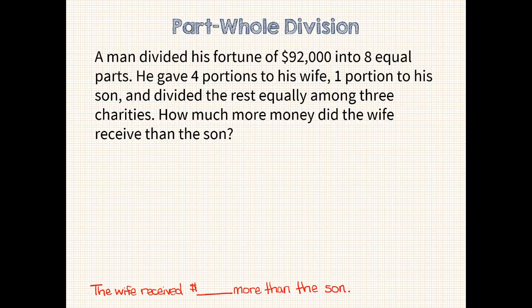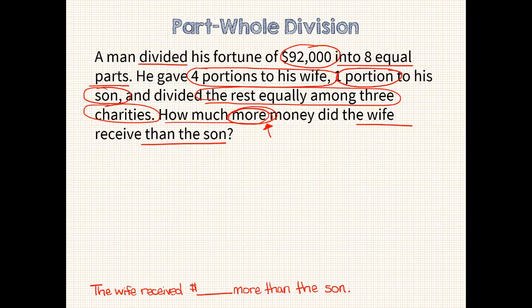The fortune is divided into 8 equal parts, 4 to go to his wife, 1 to his son, and the rest is divided equally among 3 charities. We also want to be very aware that we are being asked to find out not how much money the wife received, but how much more she received than the son.